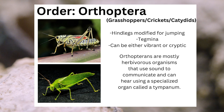The order Orthoptera, with grasshoppers, crickets, and katydids, can be identified through their hindlegs modified for jumping, their tegmina, and their vibrant or cryptic morphology. Orthopterans are mostly herbivorous organisms that use sound to communicate and can hear using a specialized organ called a tympanum.